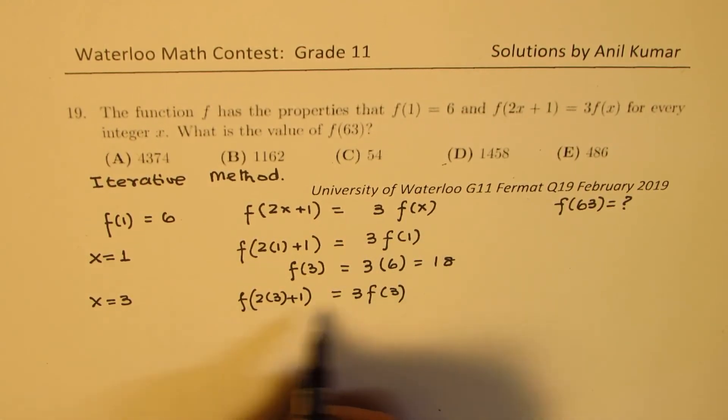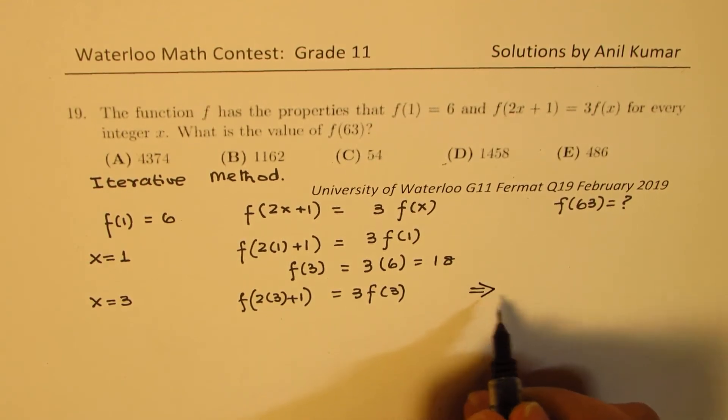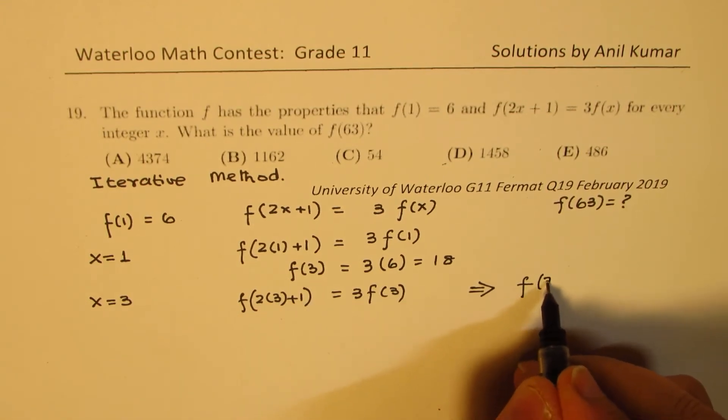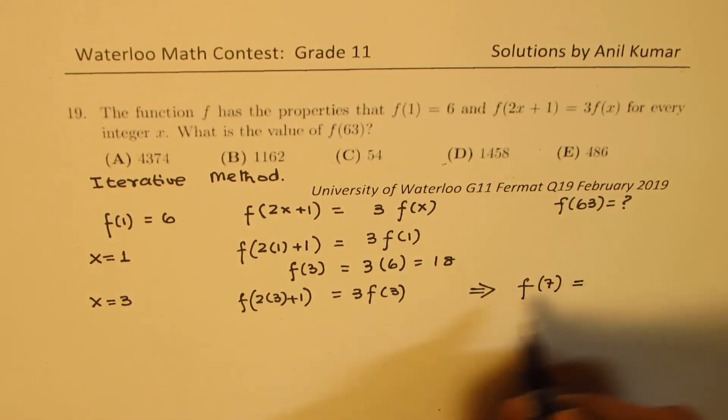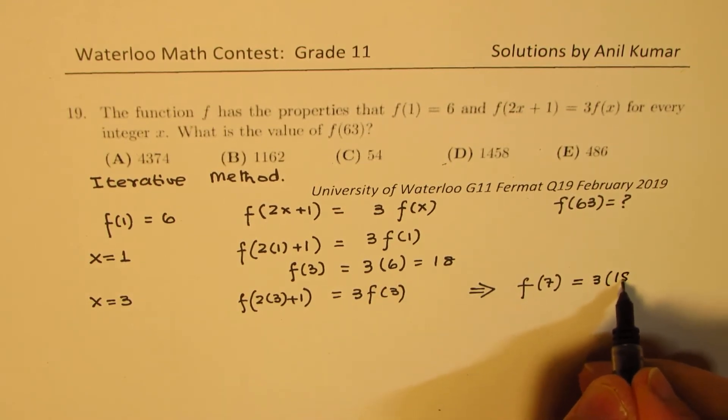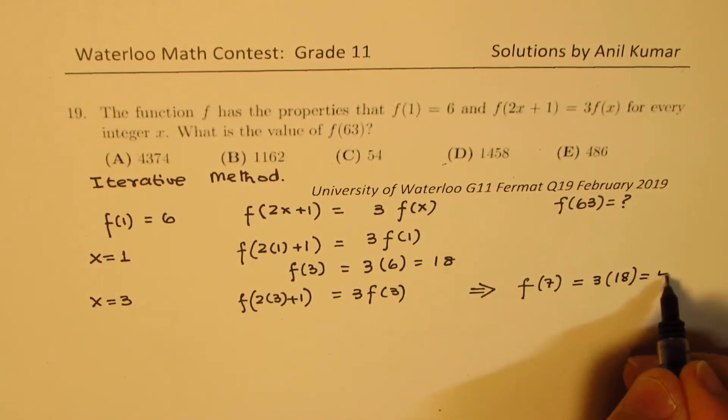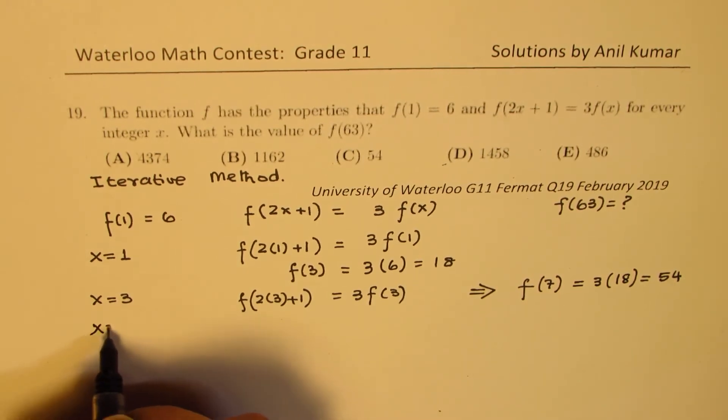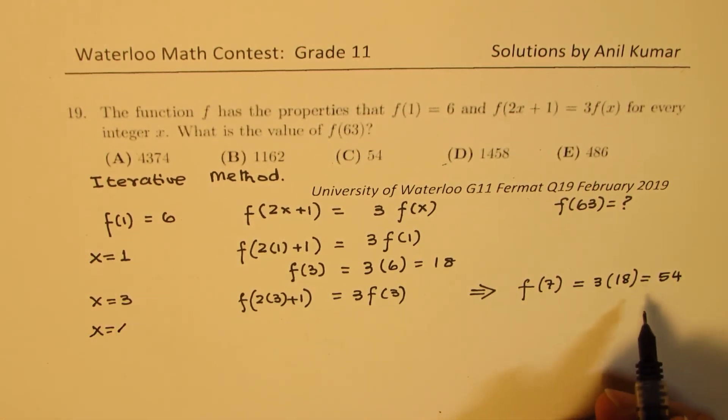That simply gives you - let me rewrite these terms on this side - that gives you f(6+1) = f(7) = 3f(3), which is 3×18, and that is 54. Now let's substitute x = 7. Now we know what is f(7), so let's substitute 7.